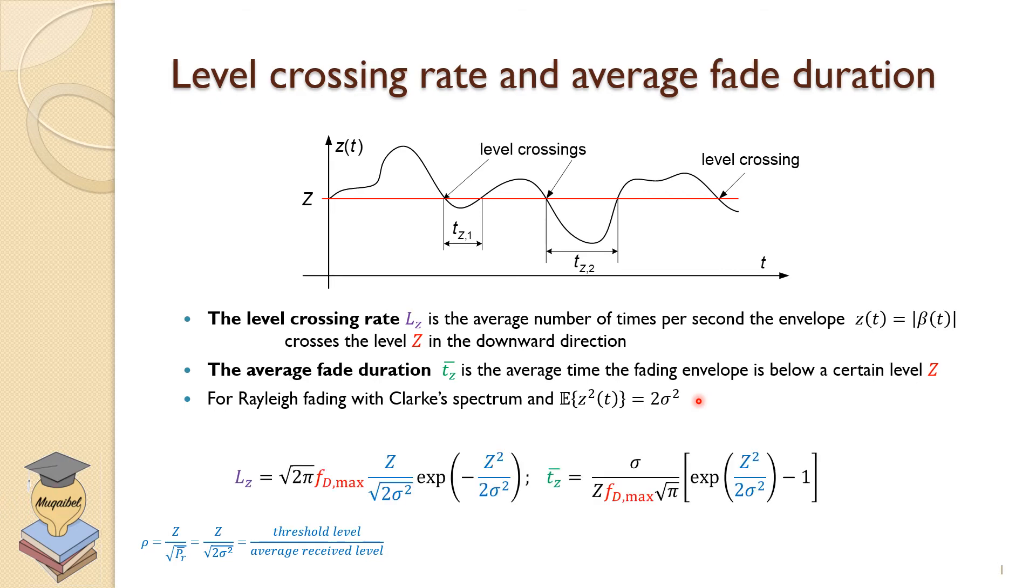We will find out that, we are not going over the derivation, but we can show that Lz, the level crossing rate, depends on the Doppler. So FD max. It also depends on sigma, how the channel varies. So this is the level crossing rate.